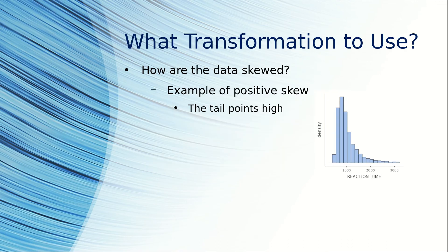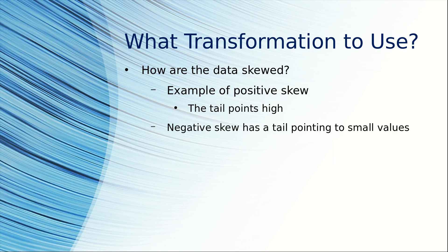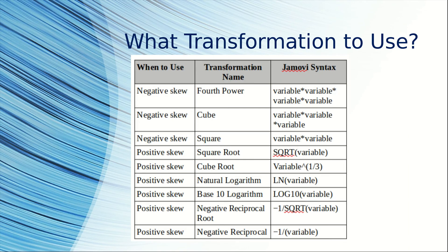But which transformation do you use? A lot of it depends on how the data are skewed. Notice that these data are positively skewed — the tail points toward high numbers. Negative skew has a tail pointing to small values. Here are some examples of transformations you can use to account for negatively and positively skewed data.